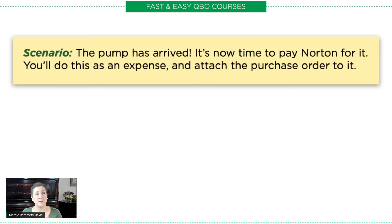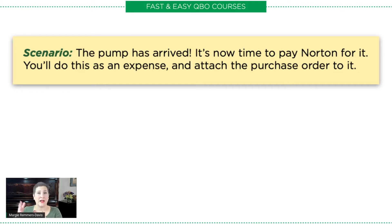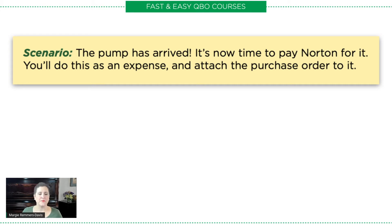The pump has arrived. Remember, this is a continuing story — we first created an estimate, then Gavelberg Photography said yes and we put in a purchase order. Now the pump that we set up the purchase order for has actually come, so now we're going to go and actually buy it. The pump has arrived and it's now time to pay Norton for it. We'll do this as an expense and attach the purchase order to it. So of course, we have to be in the sample company.